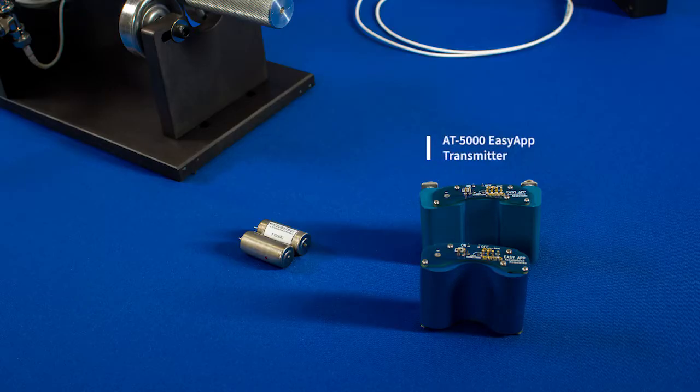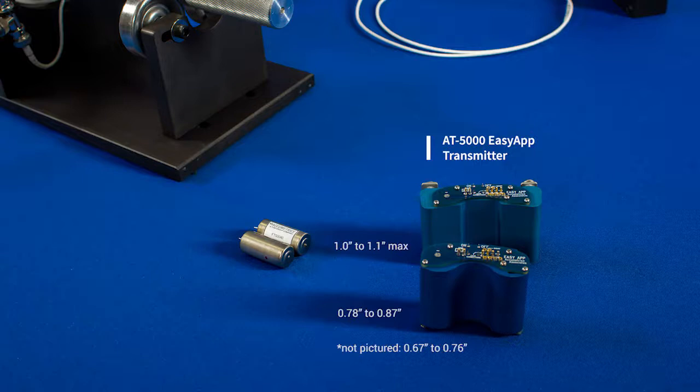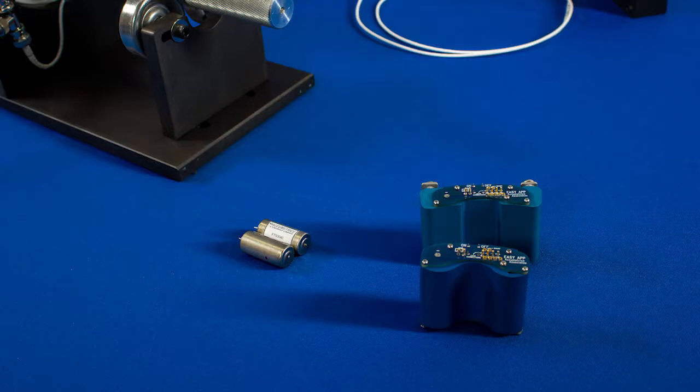The transmitter is small and available in three different housings to accommodate various shaft sizes. Its height is less than one inch to minimize radial clearance needed for the system.